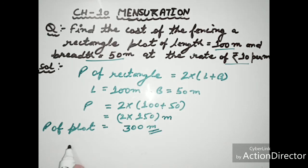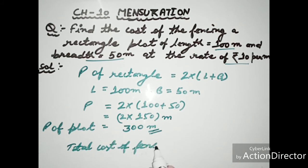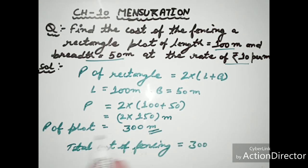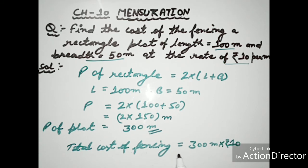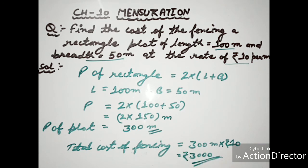Now we find the total cost of fencing. We multiply the perimeter of the plot by the rate of 10 rupees per meter. So 300 multiplied by 10 gives us 3000 rupees. The total cost of fencing is 3000 rupees.